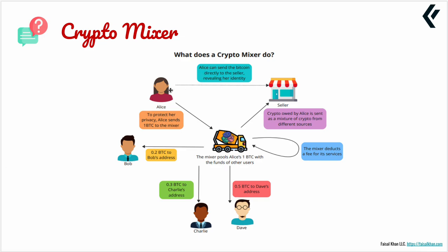Alice can send a Bitcoin to the seller and reveal her identity, or she can send it to a mixer and then send it to the seller. The seller receives it. She can give the transaction hash and say, 'you received it.' Because of the multiple people involved in the mixing part, that is what makes a mixer very successful.